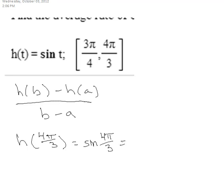4π/3 is in your third quadrant where the sine is negative, so that's negative square root of 3 over 2.